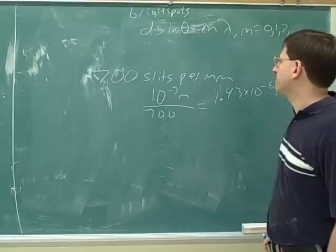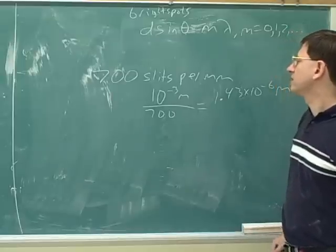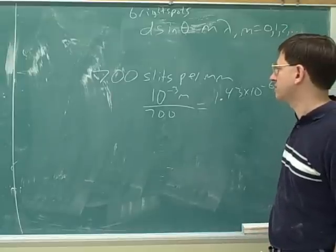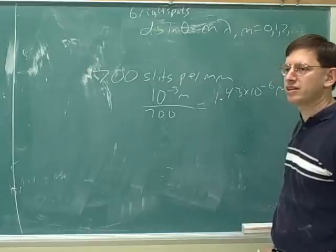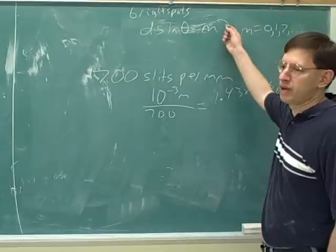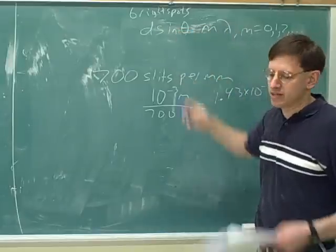So the first bright spot for the red, again, is the first bright spot for the red going to be further from the center or closer to the center than the first bright spot for the violet? Because red has the biggest wavelength, so it's going to have the biggest theta.